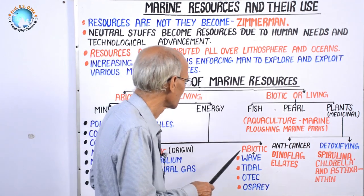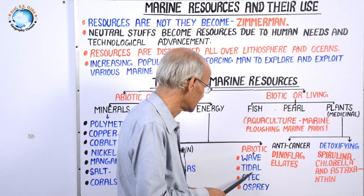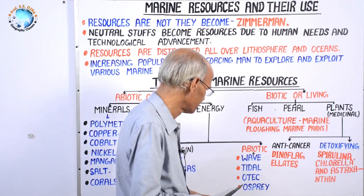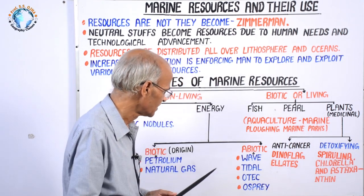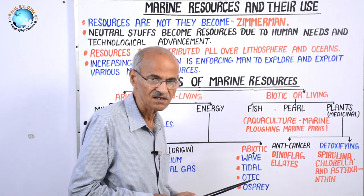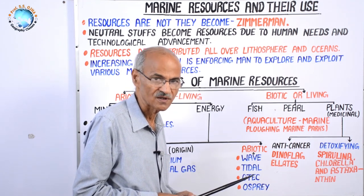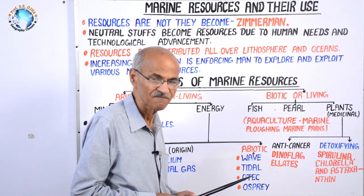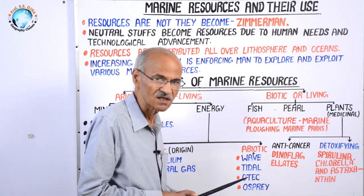The next energy is of abiotic origin. For example, wave energy, tidal energy, OTEC (ocean thermal energy conversion), and OSPREY (ocean soil power renewable energy). We have separate videos regarding wave and tidal energy. For generalization, wave and tidal energy is largely found in the Northern Hemisphere. Although there are good scopes in the Southern Hemisphere, technology has been developed largely in Northern Hemisphere countries. That's why these two energies, as well as OTEC energy, have been harnessed by Northern Hemisphere countries.